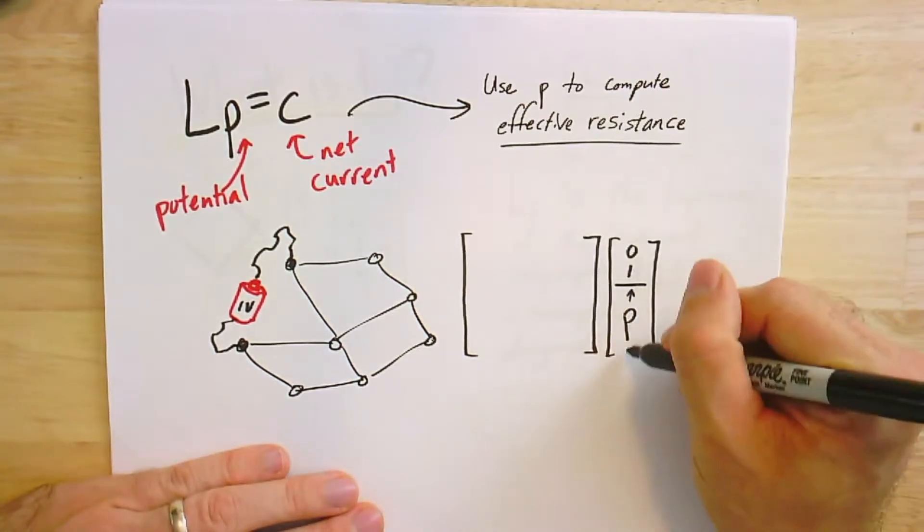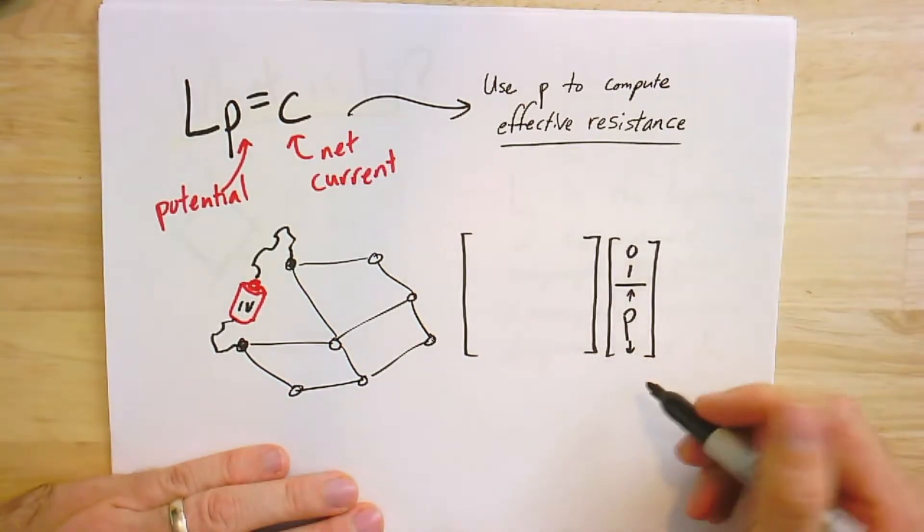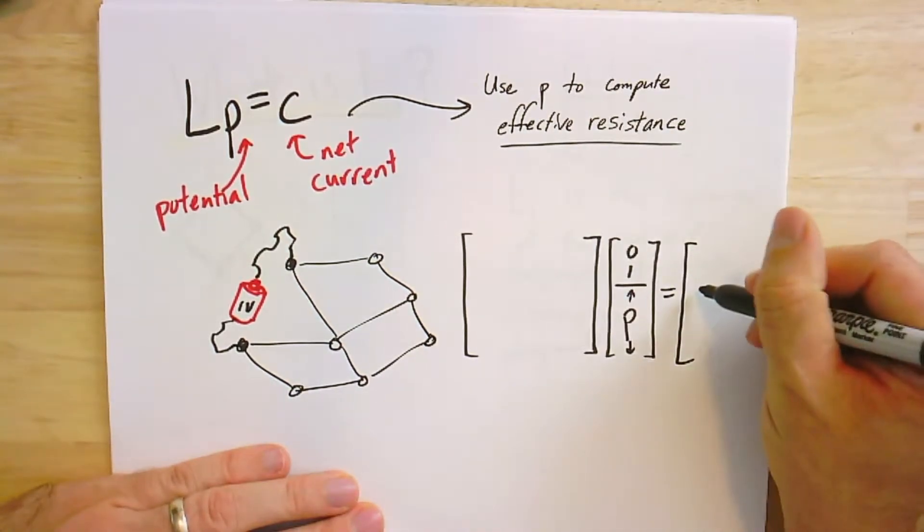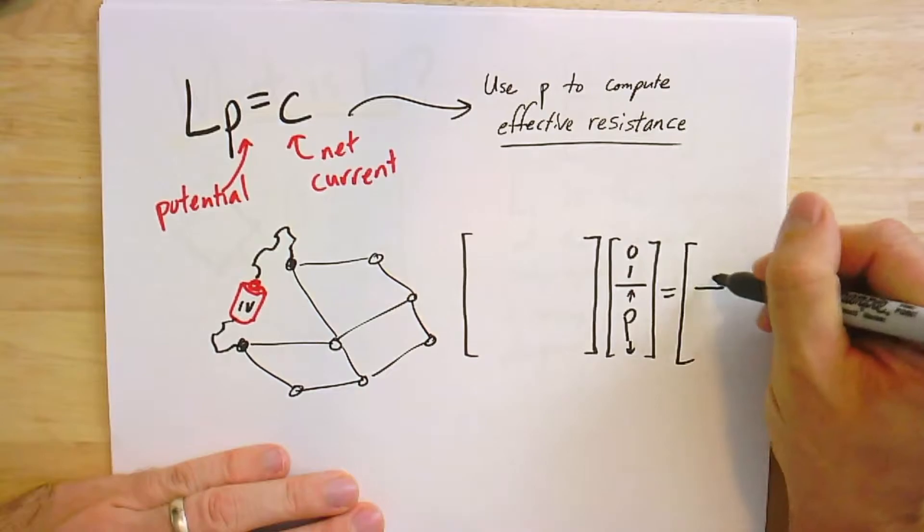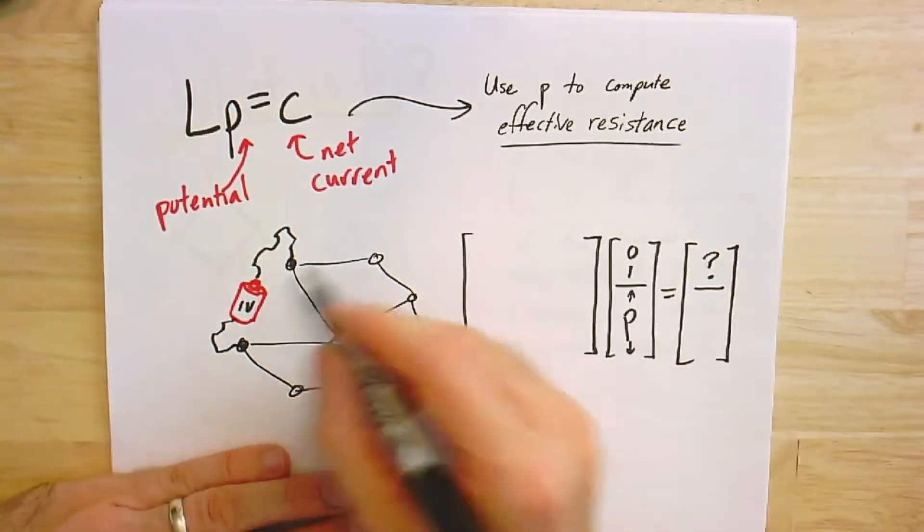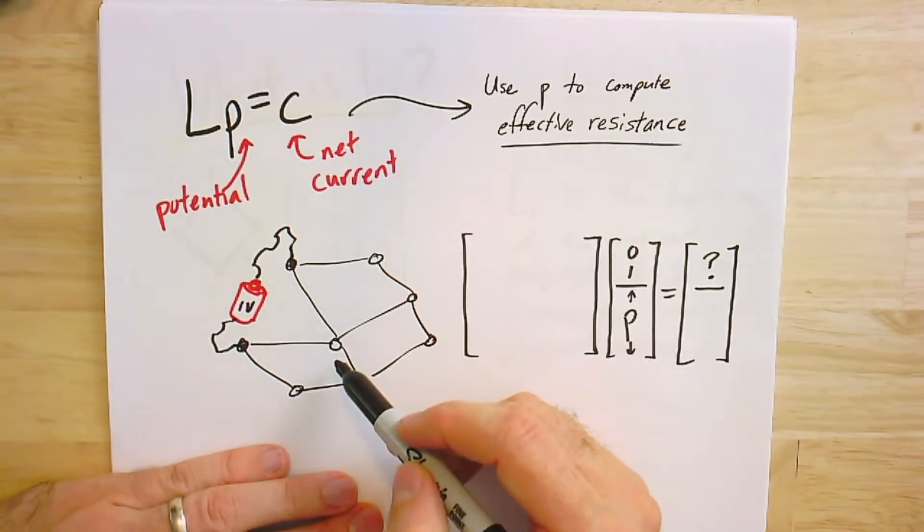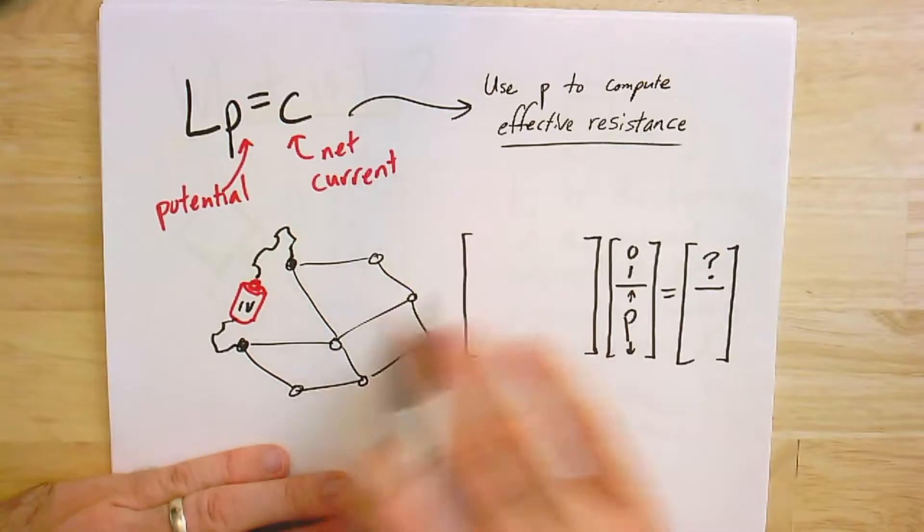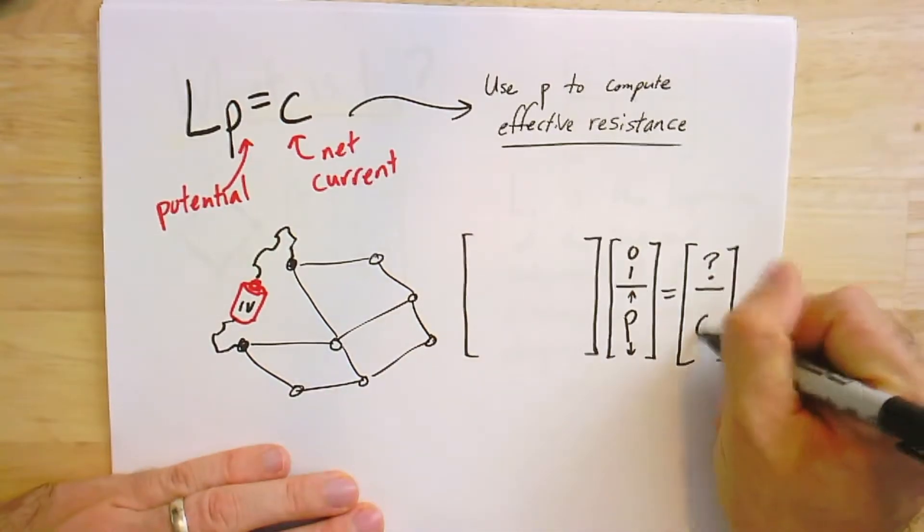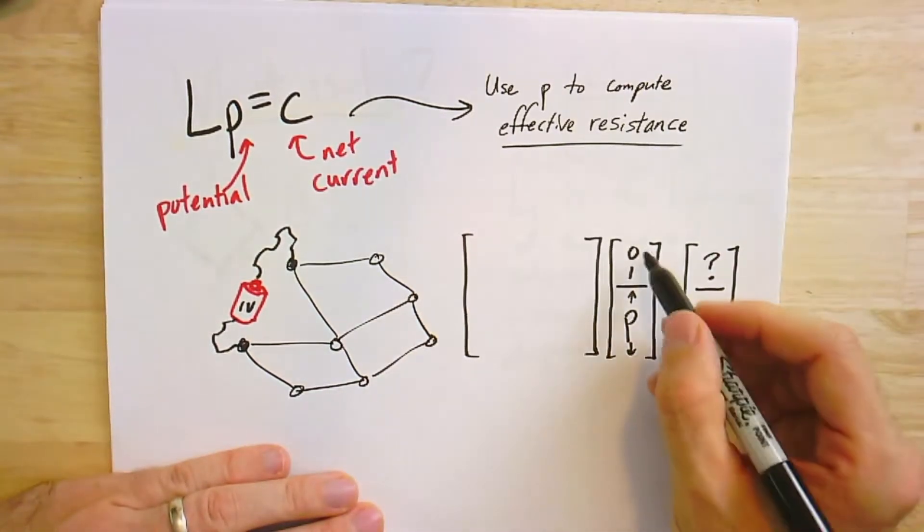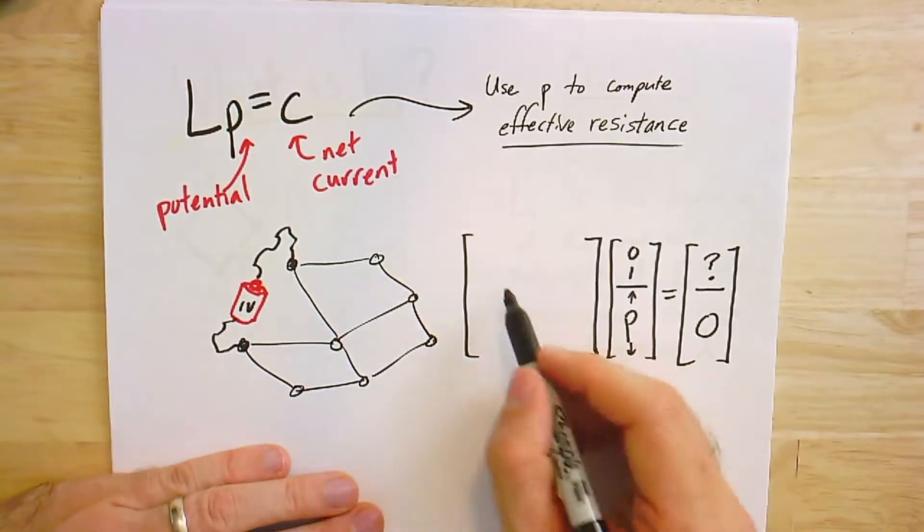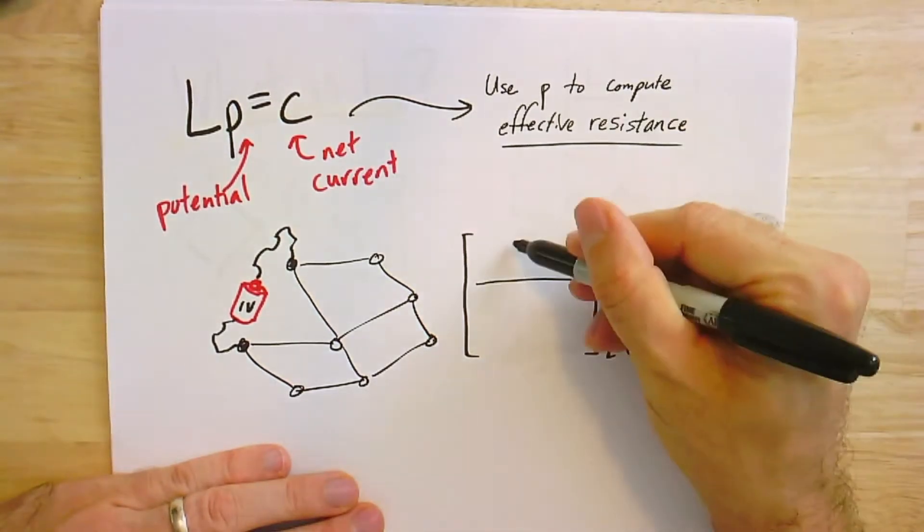Let's put in a variable here. So this is a column vector for the rest of the vertices, and that's going to be equal to, well, there's going to be some net current at those two vertices, and then we expect using Kirchhoff's current law that all the other net currents at all the other vertices should be zero. So I've broken these two vectors into blocks.